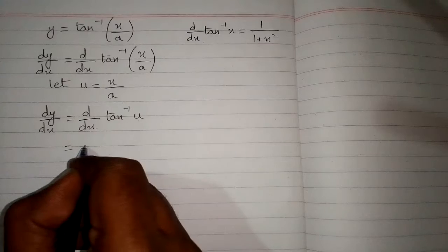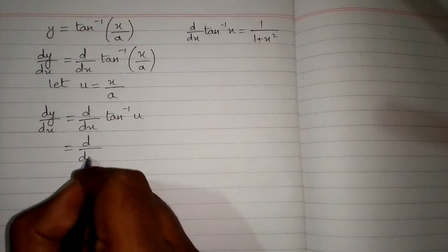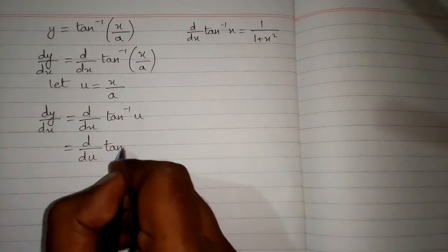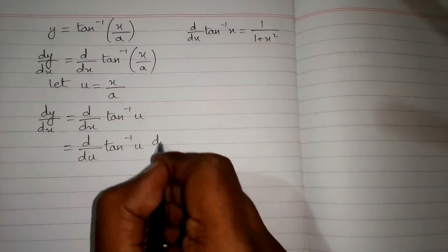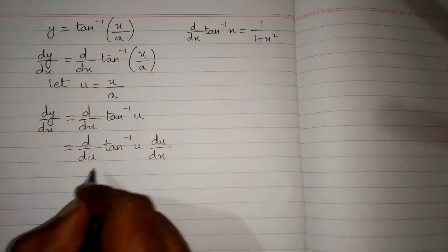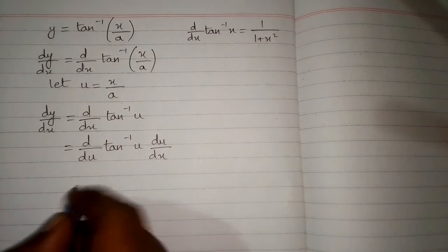So we will apply chain rule and we will replace this dx by du. So we have d/du of inverse tangent of u multiplied by du/dx. This is the chain rule of differentiation.